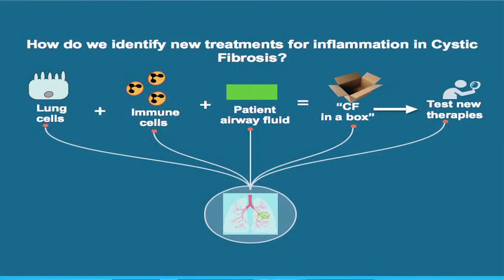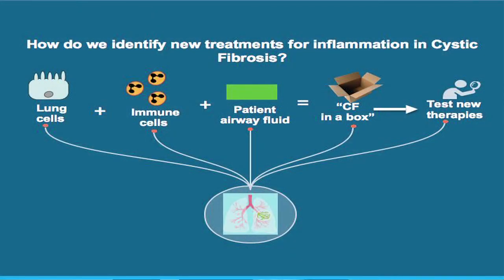CF in a box utilizes the ability to take lung cells that we create, the lung microenvironment, immune cells from patients and donors, and also airway flow, combining all of these inflammatory components from the disease lung to recreate this outside of the patient. This allows us to fine-tune and test drugs in a disease-relevant environment without utilizing animals.